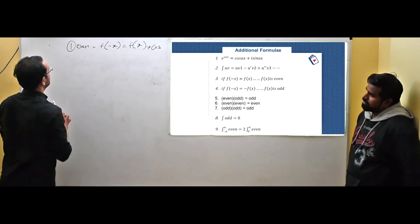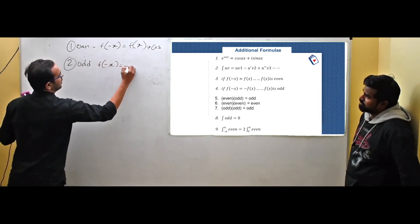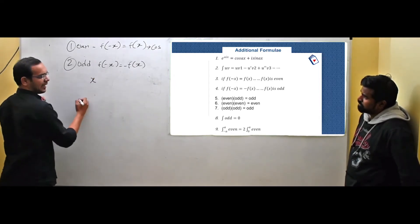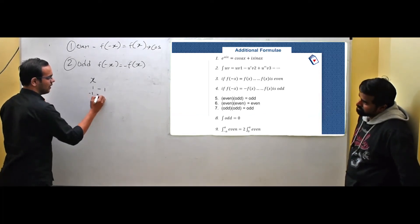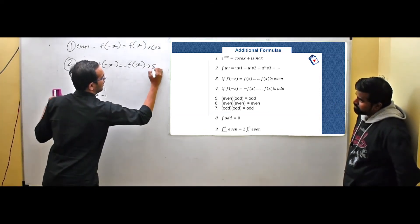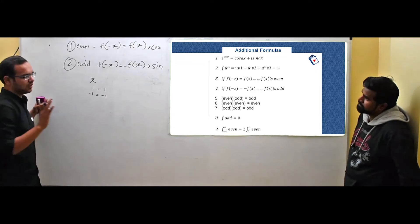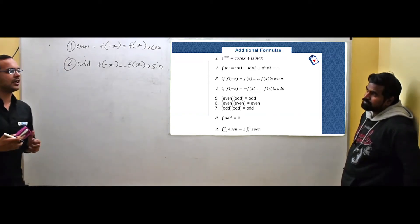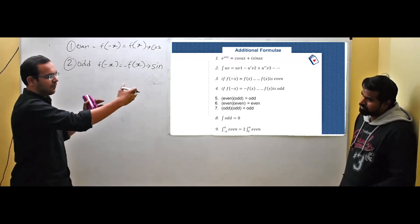The next concept is odd function, which is exactly opposite: f of minus x equals minus f of x. A simple example is x itself - x is an odd function. If x equals 1, f of x equals 1, and if x equals minus 1, the result is minus 1, which is minus of f of x. The important trigonometric result here is that sine is an odd function: sine of minus x equals minus sine of x.